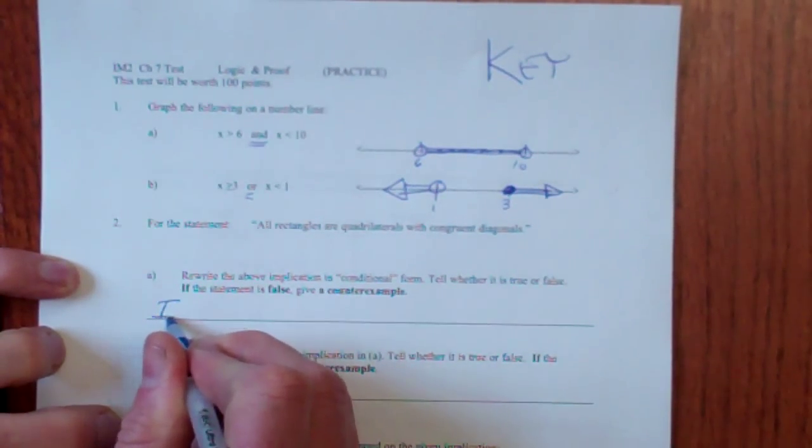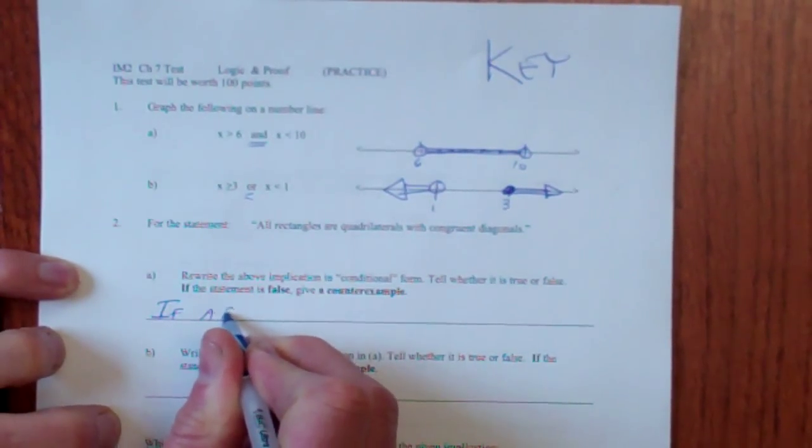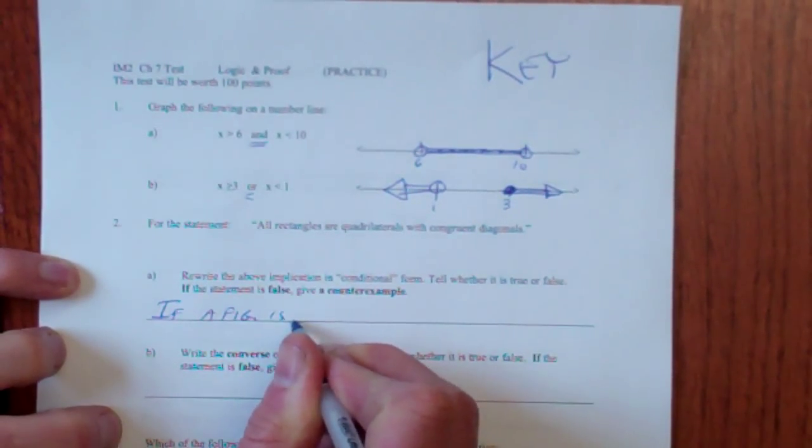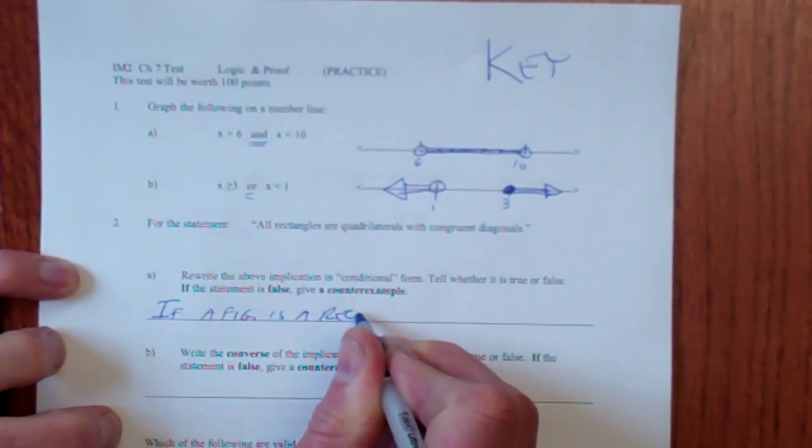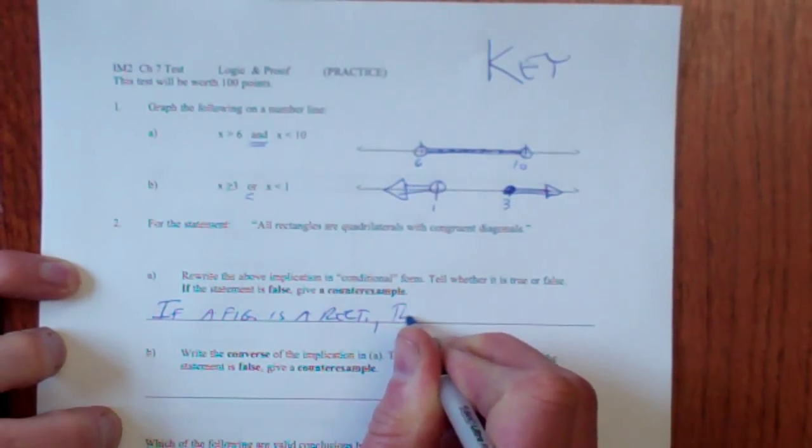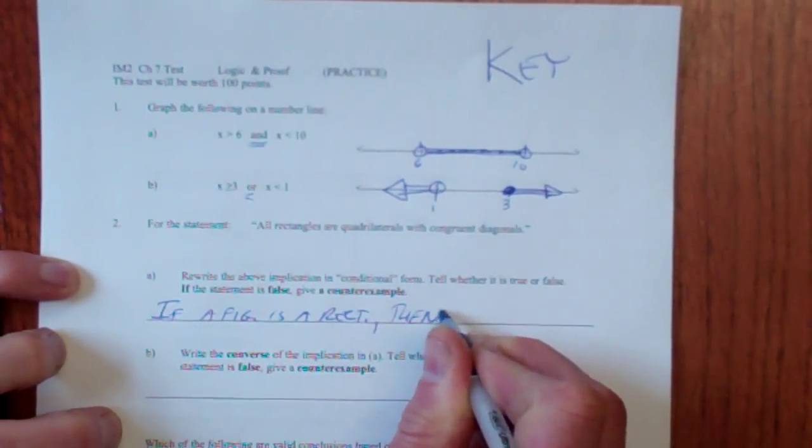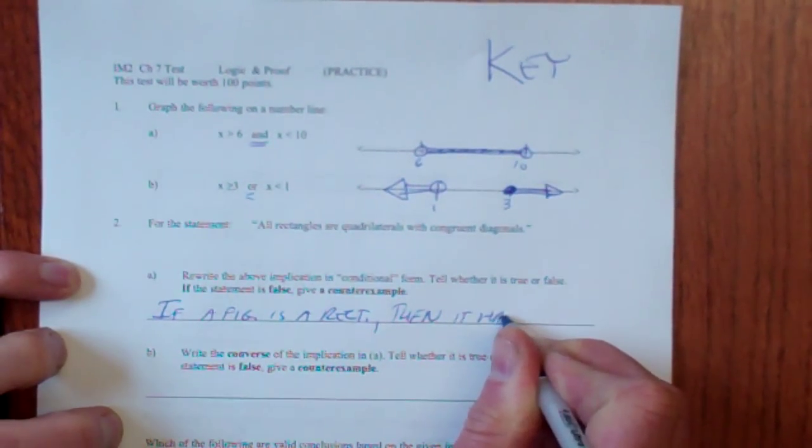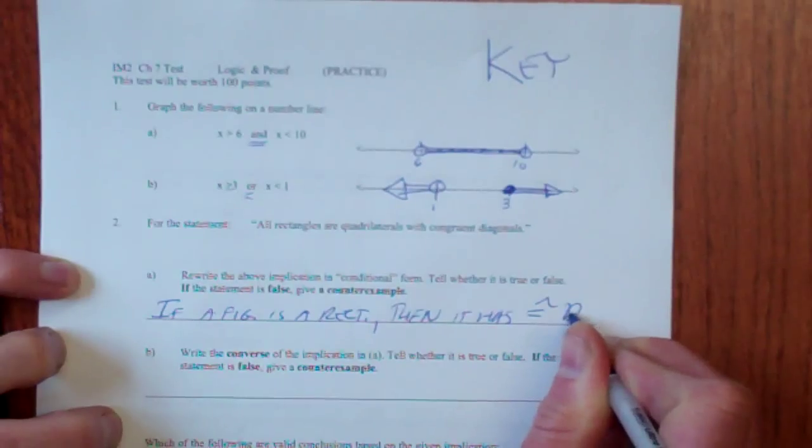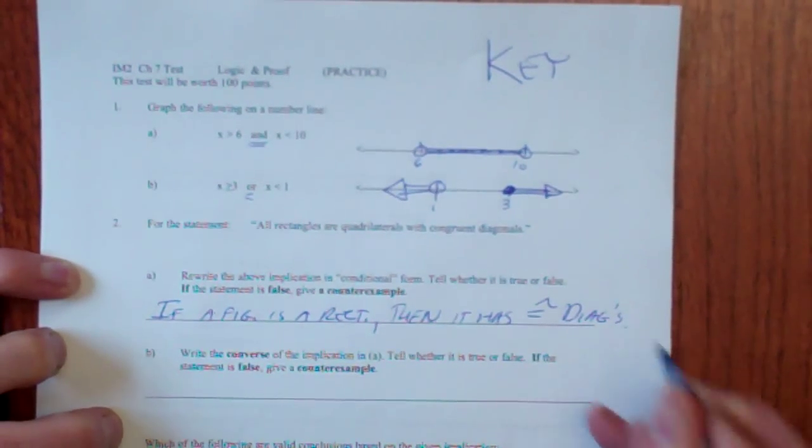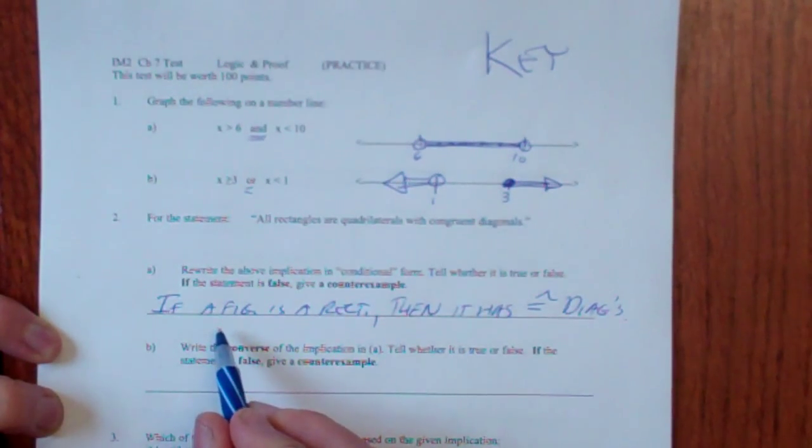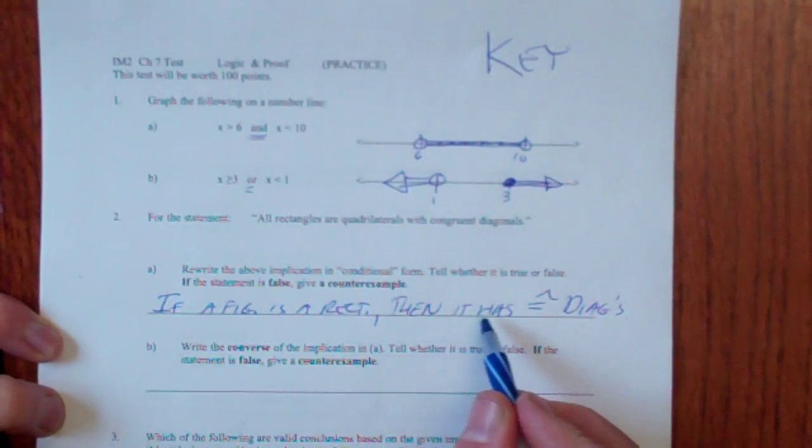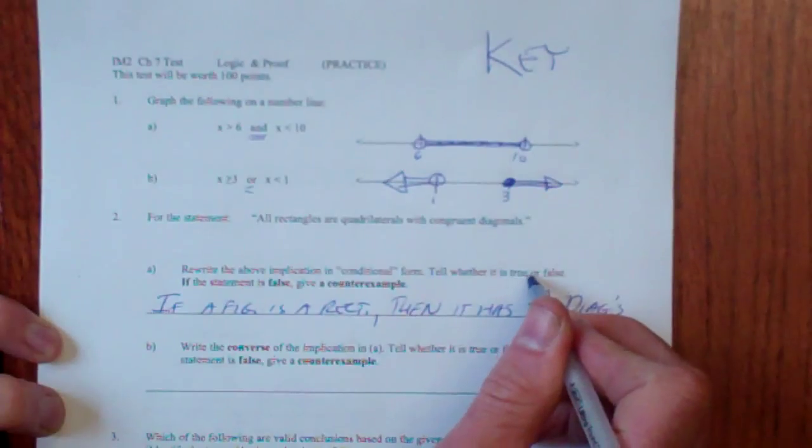If a figure is a rectangle, I can abbreviate that, then it has congruent diagonals. I'll understand that if you abbreviate it. Is that true? If a figure is a rectangle, yes, it does have congruent diagonals. So it is true.